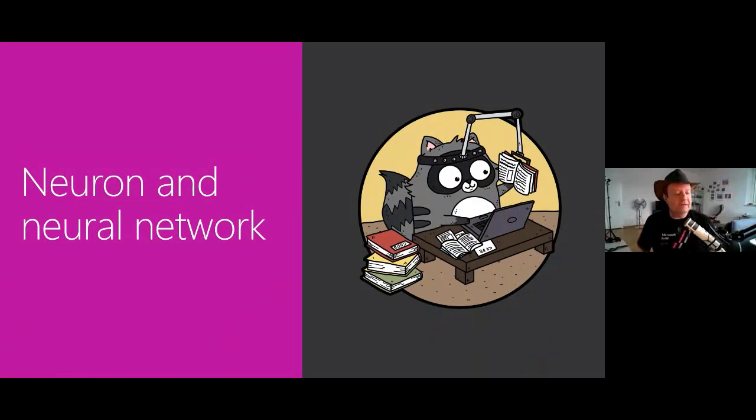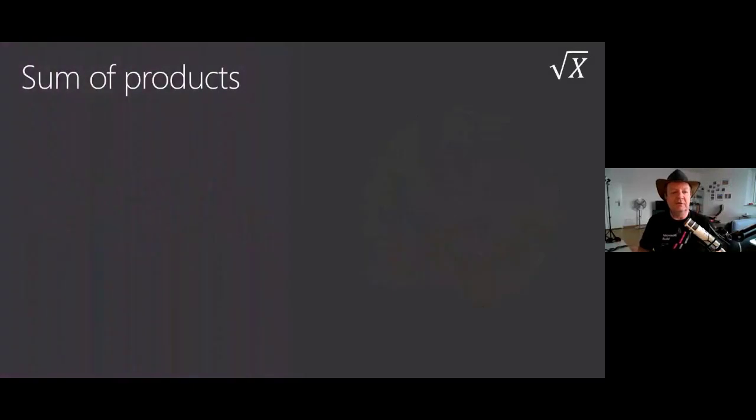Cool. So let's talk about a neuron. What is a neuron? This is the single, smallest unit of computation that we're going to use in an AI model.